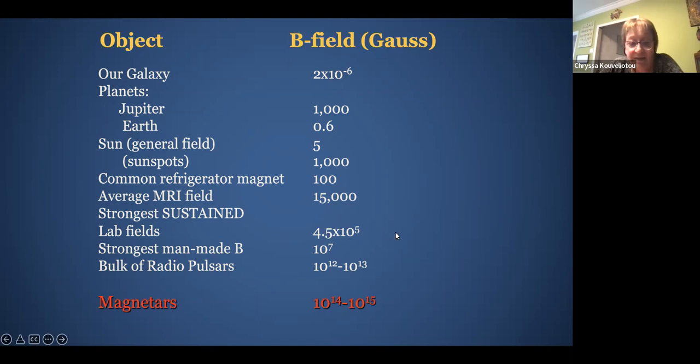For instance, our galaxy has a very low magnetic field. Planets have much higher. Jupiter is one with the highest magnetic field, 1,000 gauss. Earth has 0.6, and the solar general field is 5 gauss, while the sunspots have very strong magnetic fields of 1,000 gauss. The common refrigerator magnet is 100 gauss, and the average magnetic resonance imager field is 15,000 gauss. And every time I read that and have an MRI, I think about it. The strongest sustained laboratory fields are about 4.5 times 10 to the 5 gauss, and man-made, but not sustained magnetic fields are 10 to the 7 gauss. The bulk of radio pulsars have magnetic fields between 10 to the 12, 10 to the 13 gauss, and magnetars take the cake with 10 to the 14, 10 to the 15 gauss.